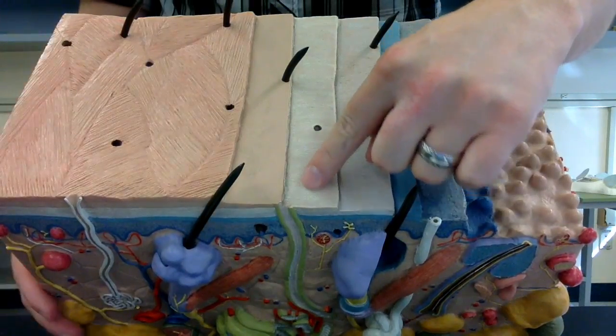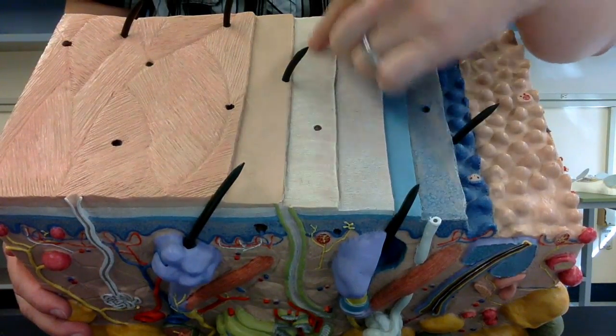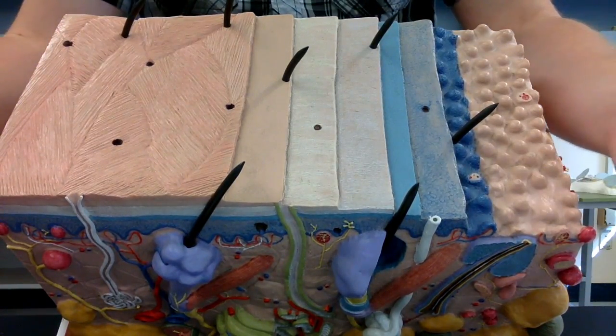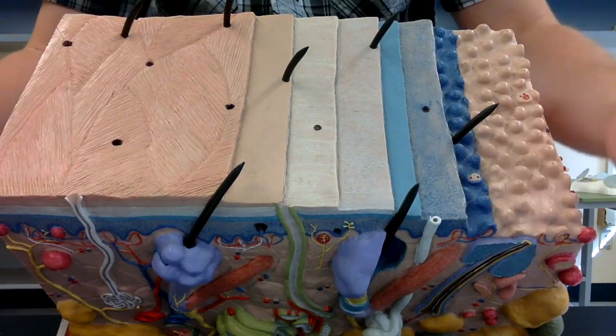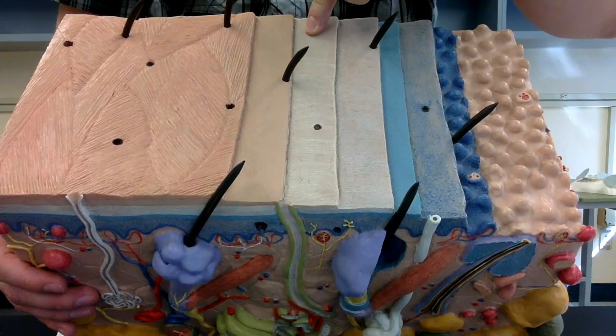The second layer in is the stratum lucidum. And this layer is actually only found in thick skin areas, which means the palms of your hands, the soles of your feet, those kind of regions. So stratum corneum, stratum lucidum.